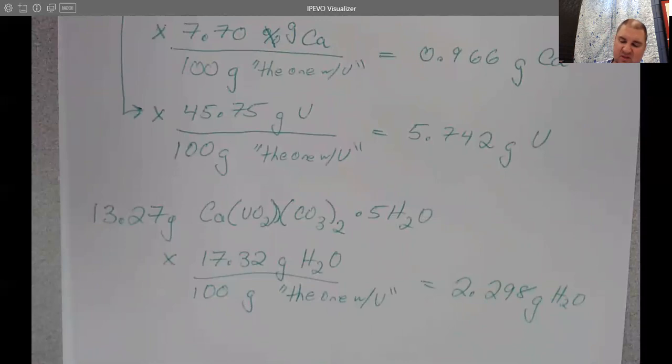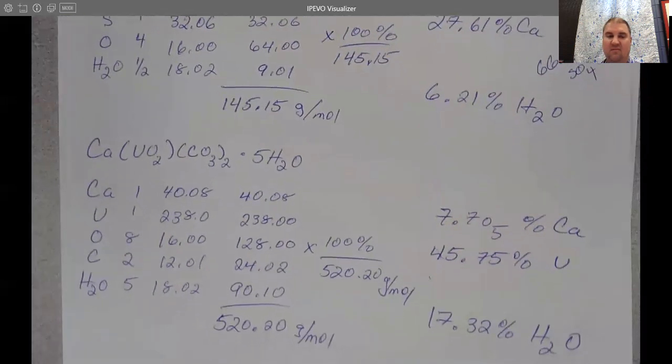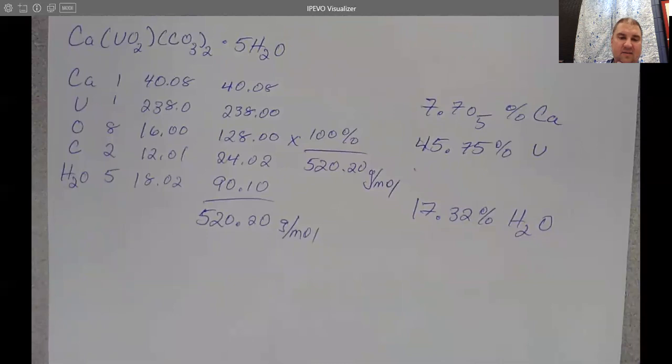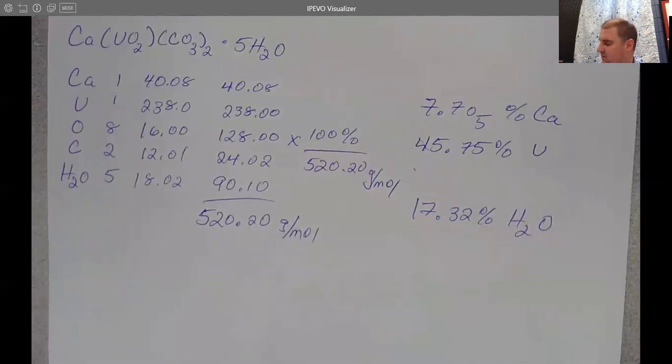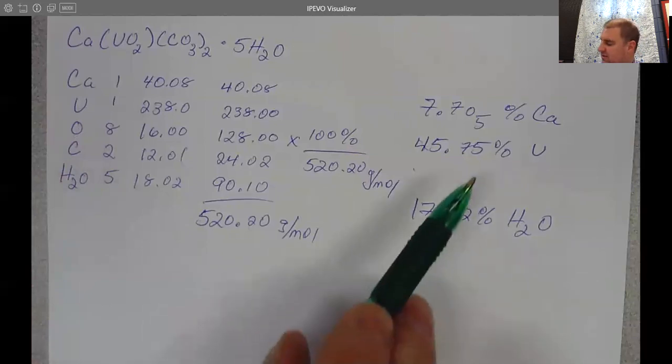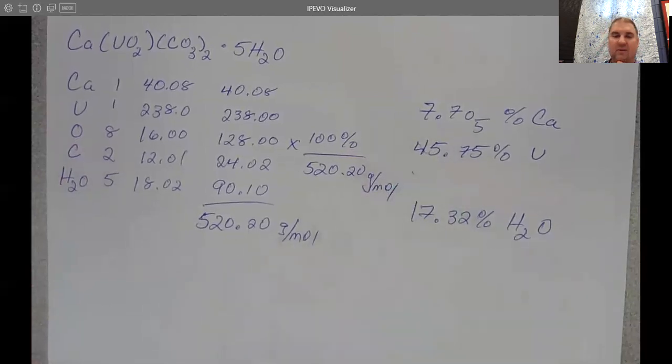So the key here really is that these percents can be conversions. And those numbers you can see came from my molar mass table worth of work that I did for that compound. I didn't work every single thing out here. I didn't work out the carbonate part. And I didn't work out the oxygens that came from the uranyl. But I worked out the two metals and I worked out the water.